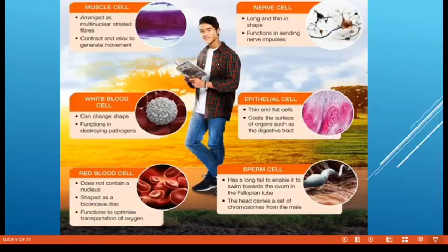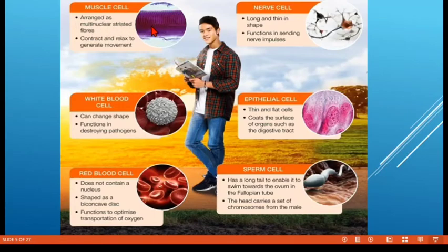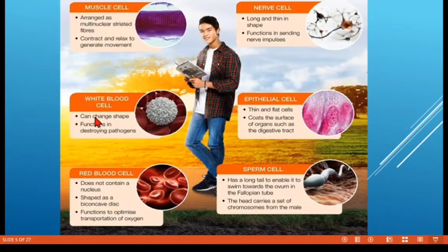Each type of cell is specialized to carry out a specific function. For example, muscle cells — their structure has multinuclear striated fibers, and their function is to contract and relax to generate movement. White blood cells can change in shape; their function is to destroy pathogens. Pathogens are microorganisms that cause disease.